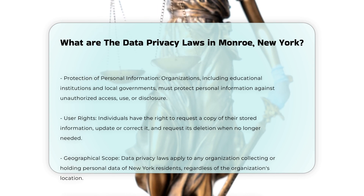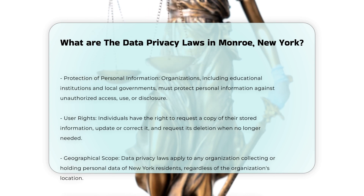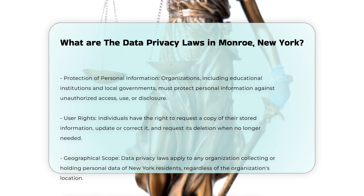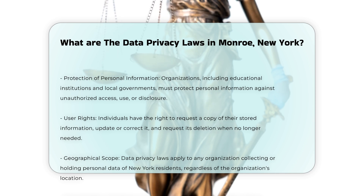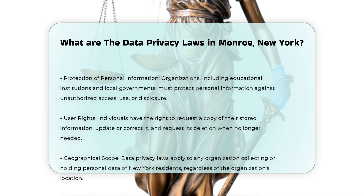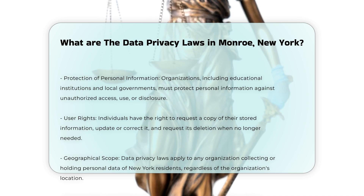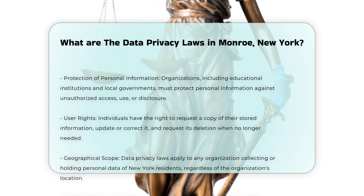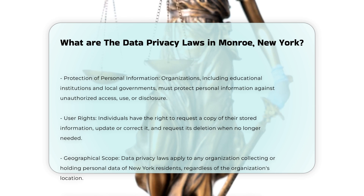Local ethics codes: Local governments in Monroe, New York, such as the town of Monroe, have their own codes of ethics that include provisions related to the disclosure and protection of personal information. These codes aim to maintain public confidence in local government by ensuring transparency and ethical conduct among officials and employees.